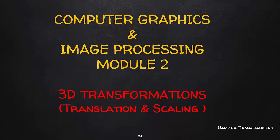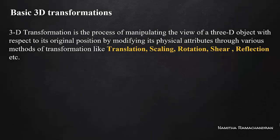In the previous videos, we covered 2D transformations — transformations on a two-dimensional plane. The difference now is we are dealing with 3D, three-dimensional object transformations. We have previously discussed translation, scaling, rotation, shearing, and reflection. All of these are applicable here, but the object is a three-dimensional object in space, so we will apply these transformations accordingly.